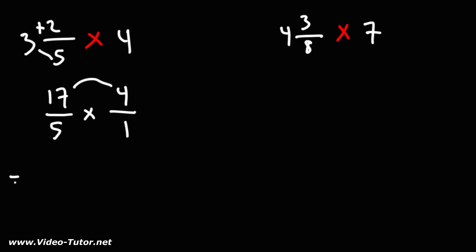17 times 4: 10 times 4 is 40, 7 times 4 is 28, 40 plus 28 is 68. And on the bottom, we have 5 times 1, which is 5.